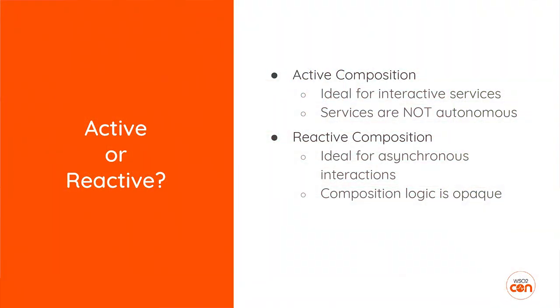How do you identify what is best for your enterprise — active or reactive architecture? Active composition is good for interactive services like banking applications, web applications, or sites like Amazon or eBay, where users expect a response when they send a request. The reactive composition architecture is good for asynchronous type integration, where the composition logic is implemented at the applications and microservices level.